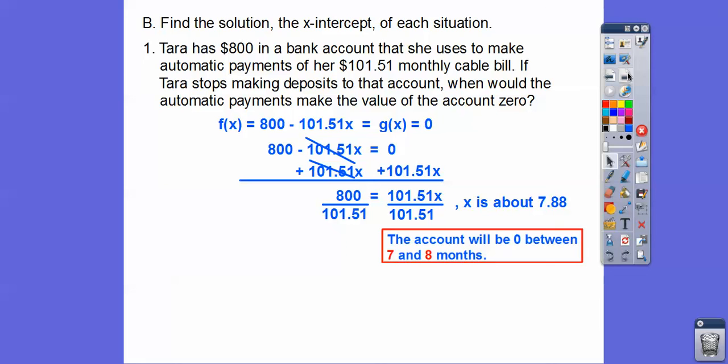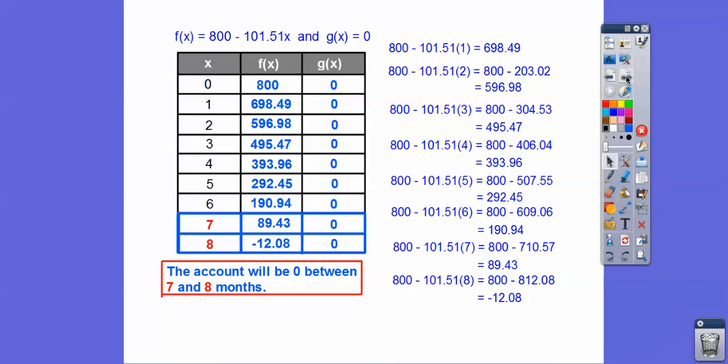Okay, so the account's going to be 0 somewhere between the 7th and the 8th month. Always answer it in the context of the problem. Don't stop here. This means nothing. I don't know what that means. Does that mean ounces, feet, inches? What does it mean? Well, it's talking about months. So between the 7th and 8th month, the account will be 0. You always got to answer it in the context of the problem.